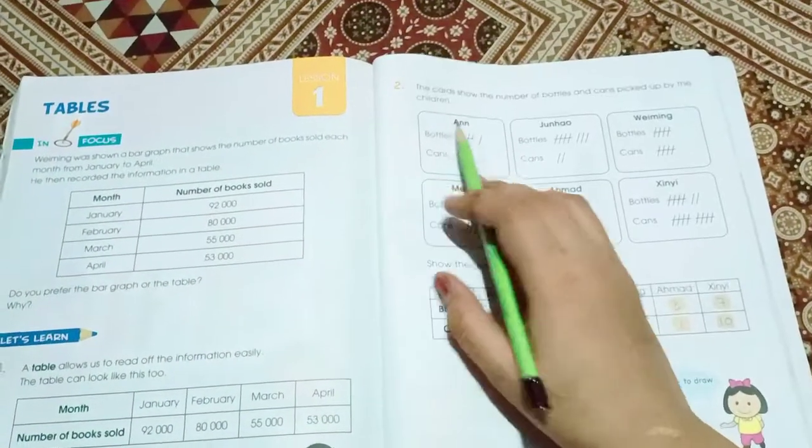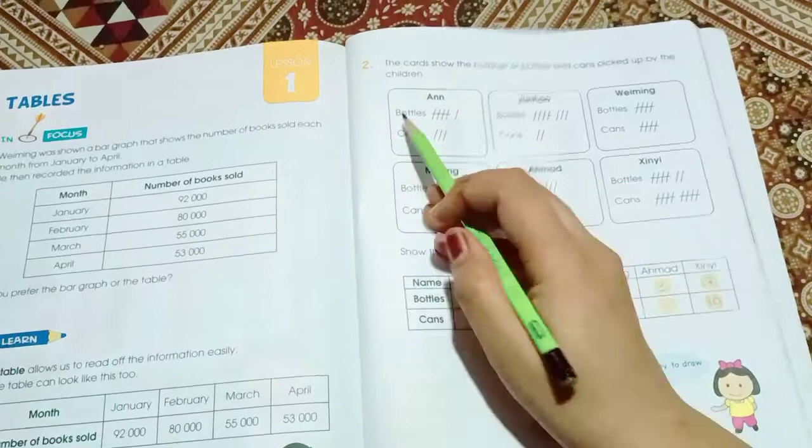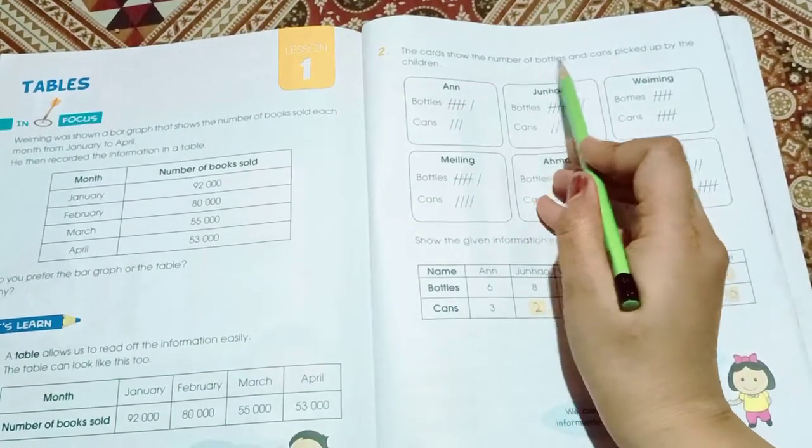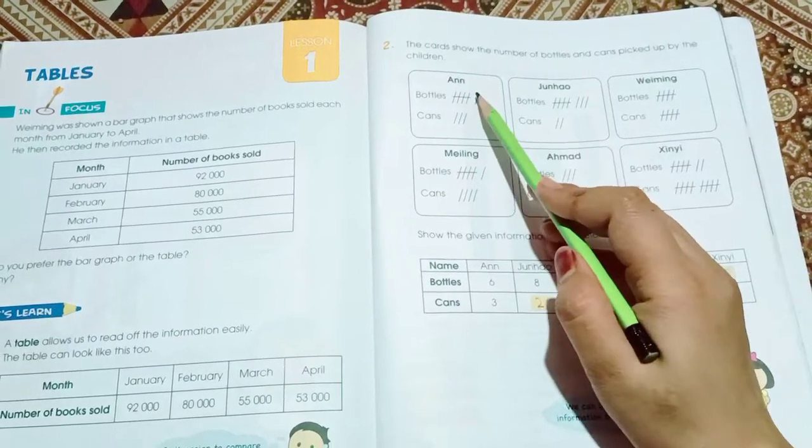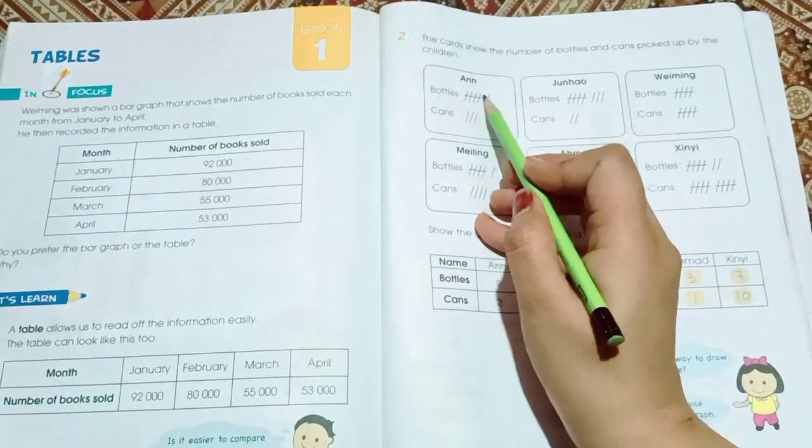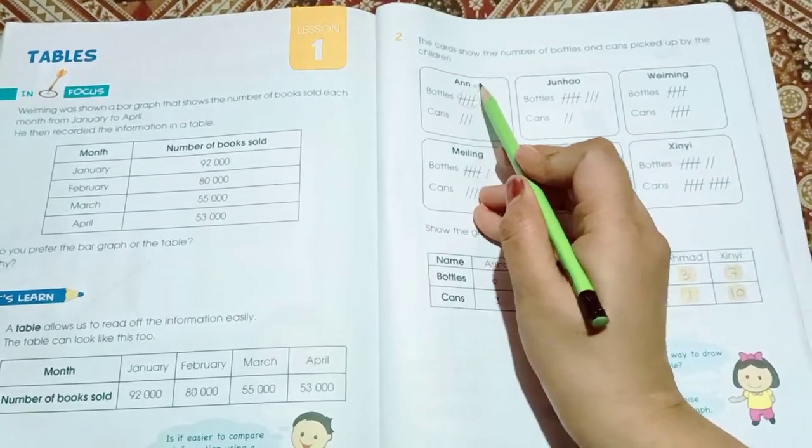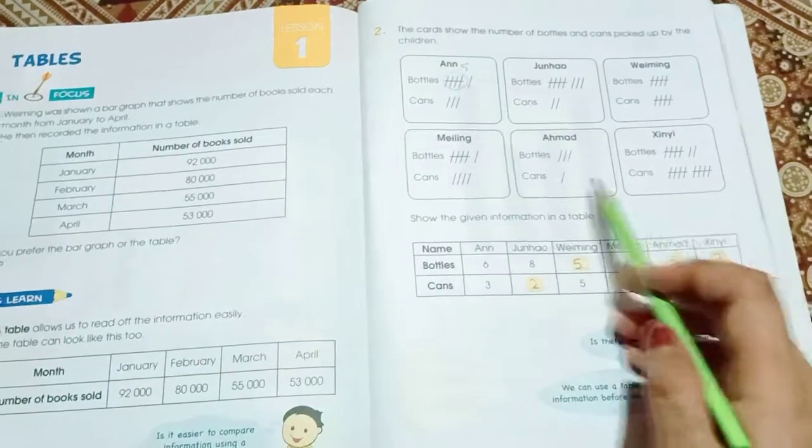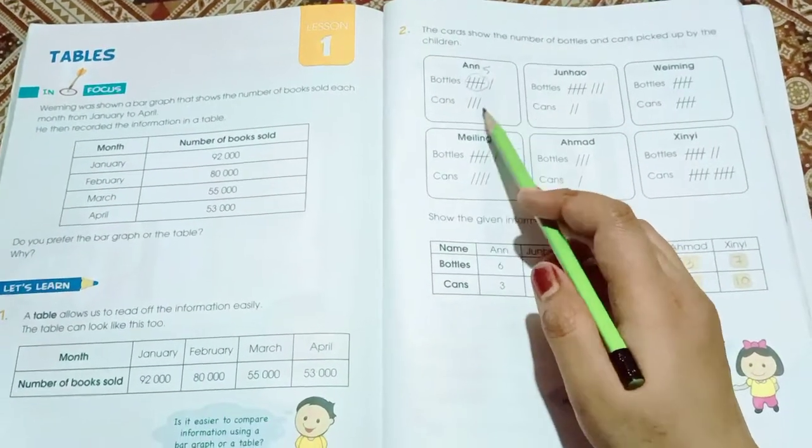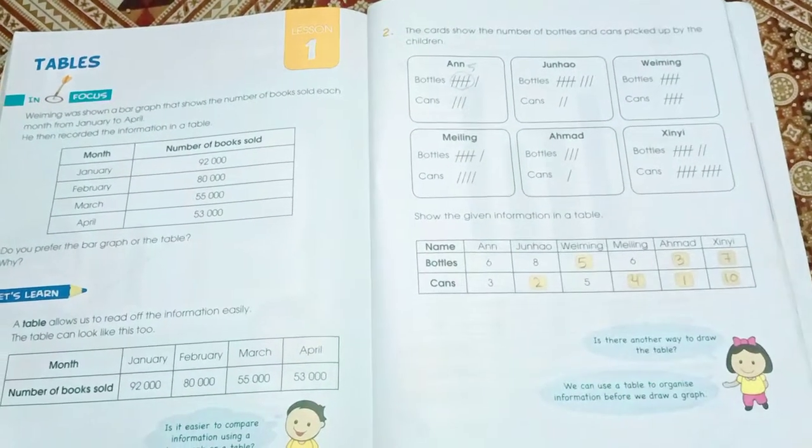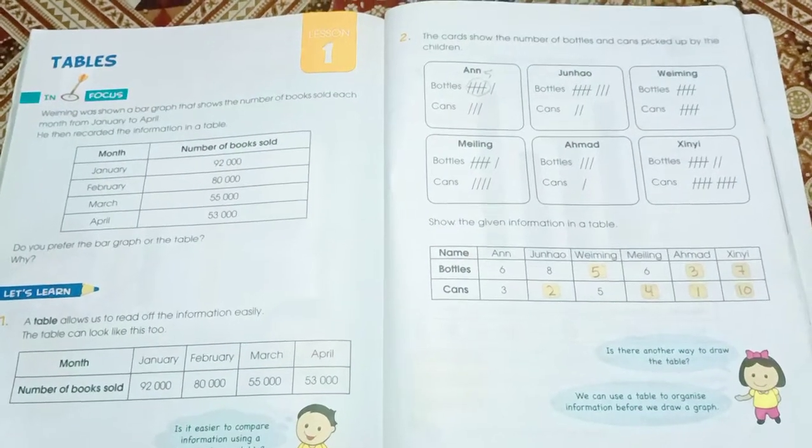Here we have the card shows the numbers of bottles and cans picked up by the children. Here are the cards. This line is 5. So there are 6 bottles and 3 cans. Now we have to fill in the box here.